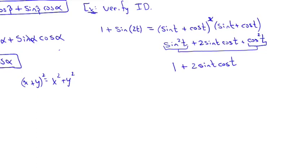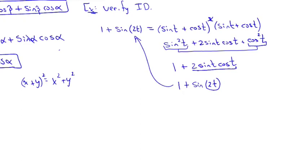Remember, these identities go in either direction. I can substitute: 2 sine t cosine t is the same as sine of 2t. So you get 1 plus sine of 2t, which gives you the left-hand side.